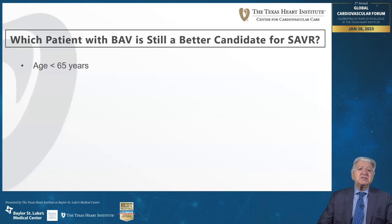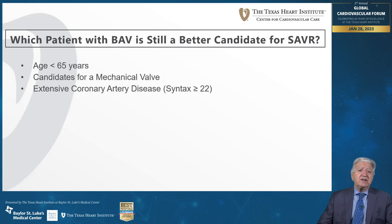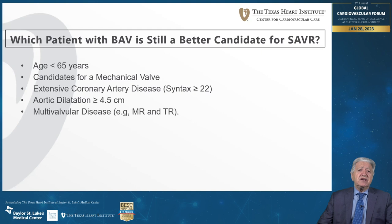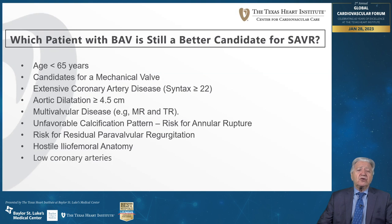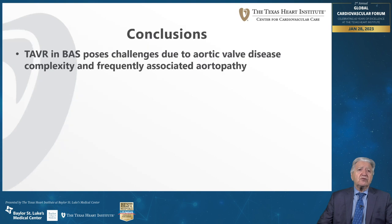Which patients with bicuspid aortic valve remain better candidates for surgery? Younger patients, those needing a mechanical valve, patients with extensive coronary circulation or significant aortic dilatation, multivalvular disease, unfavorable calcification pattern or risk of annular rupture, patients at risk of perivalvular regurgitation, challenging iliofemoral anatomy, low coronary arteries, or anomalous coronary artery origin.